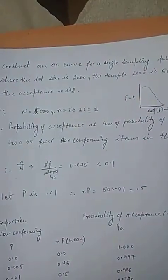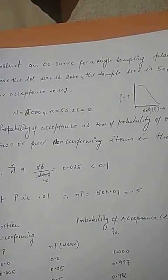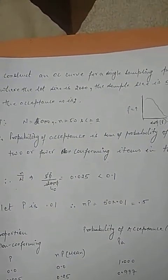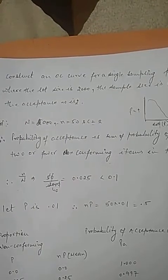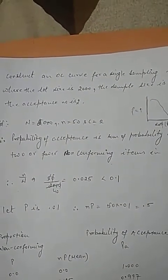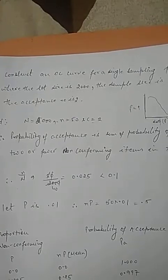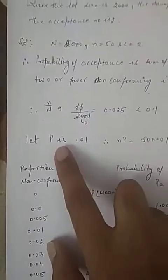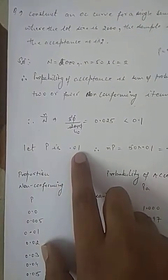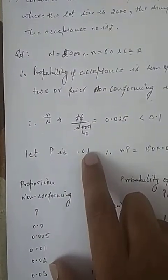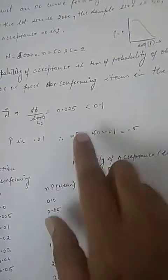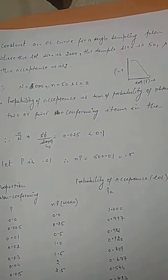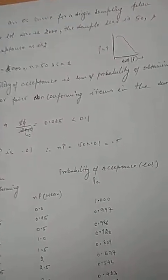Binomial distribution will provide similar answers as we discussed. When n value is greater, like 20 or above, then we have to use Poisson distribution.